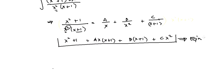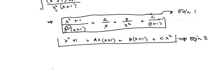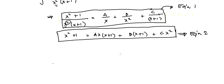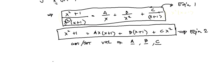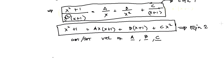This is now Equation 2, and our original integral expression is Equation 1. From Equation 2, we need to determine the values of our three constants: A, B, and C. We will substitute specific values of x to simplify the equation and make other variables vanish so we can solve for one unknown at a time.